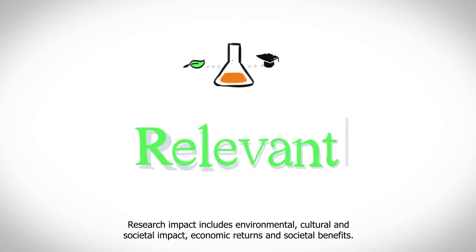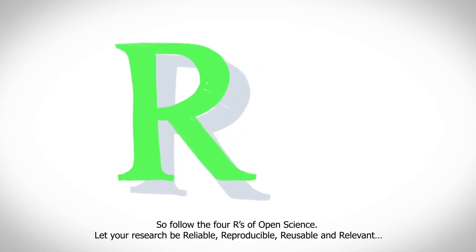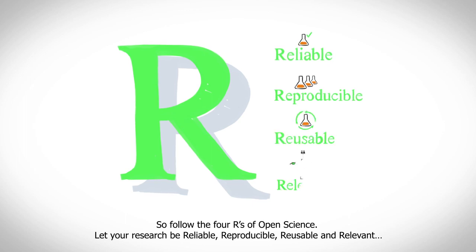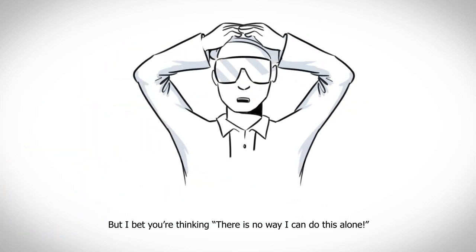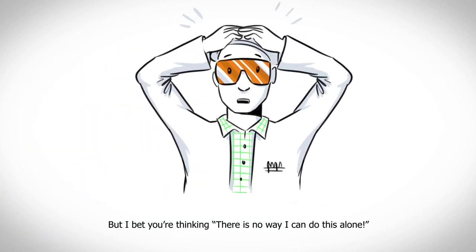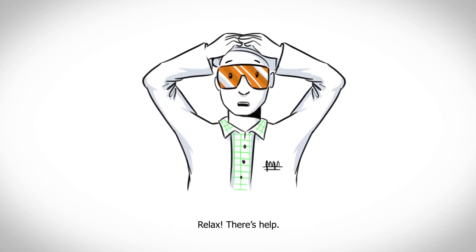Research impact includes environmental, cultural, and societal impact, economic returns, and societal benefits. So follow the four R's of open science: let your research be reliable, reproducible, reusable, and relevant. But you might be thinking — there's no way I can do this alone. Relax, there's help.